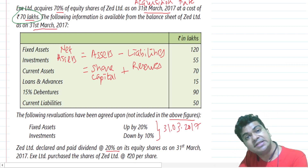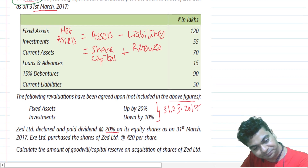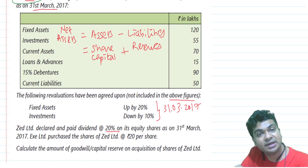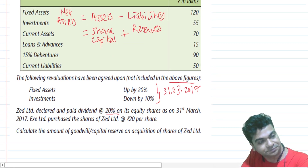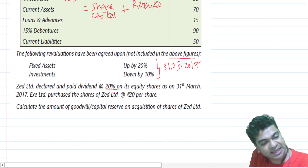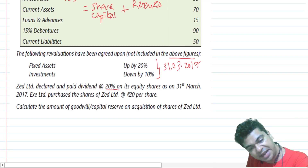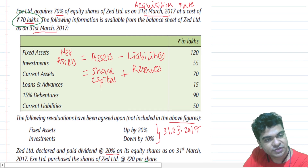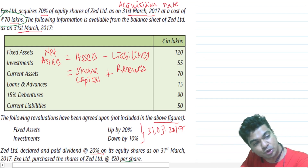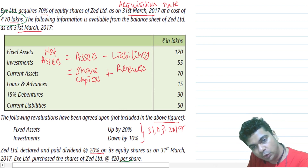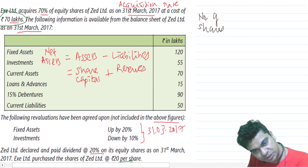The problem is that the share capital has not been given. Dividend rates are applied to the paid-up equity share capital, but that figure is missing. However, they have told us that X-Limited purchased shares of Z-Limited at ₹20 per share. We have purchased 70% of equity shares for ₹70 lakhs, so the number of shares purchased is 70 lakhs divided by 20, which equals 3.5 lakh shares.